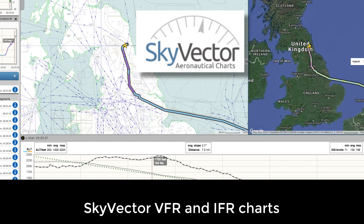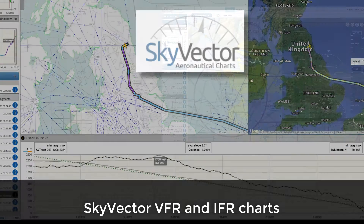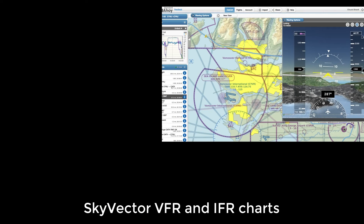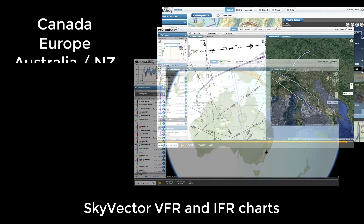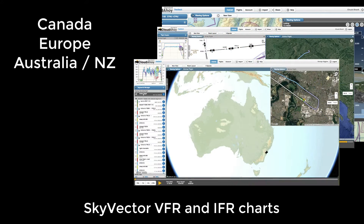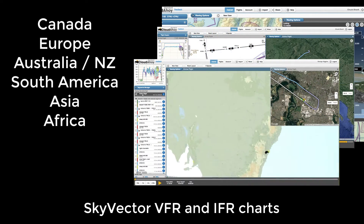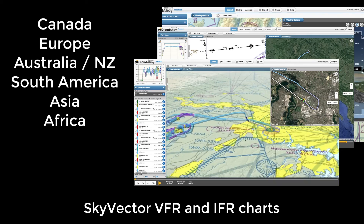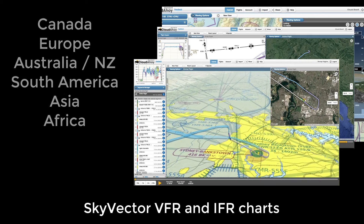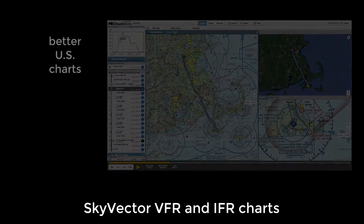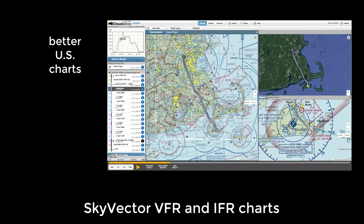Skyvector is a prime provider of aviation charts worldwide, known for its accuracy and clarity. As of version 5.0, our customers flying in Canada, Europe, Australia, and anywhere else can use aviation charts in their debriefs. More international aviation data coming soon. With the Skyvector charts, our US customers would also get higher quality and speed.